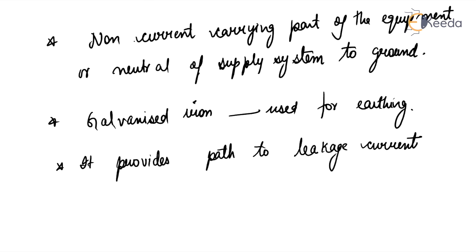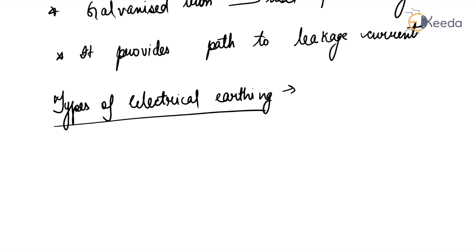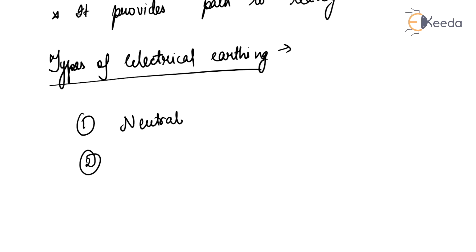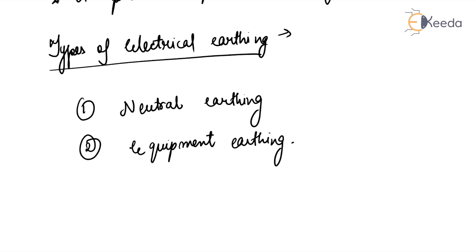Now, types of electrical earthing. Electrical equipment mainly consists of two non-current carrying parts: the neutral of the system and the frame of the electrical equipment. From the earthing of these two non-current carrying parts, we get two types: neutral earthing and equipment earthing.